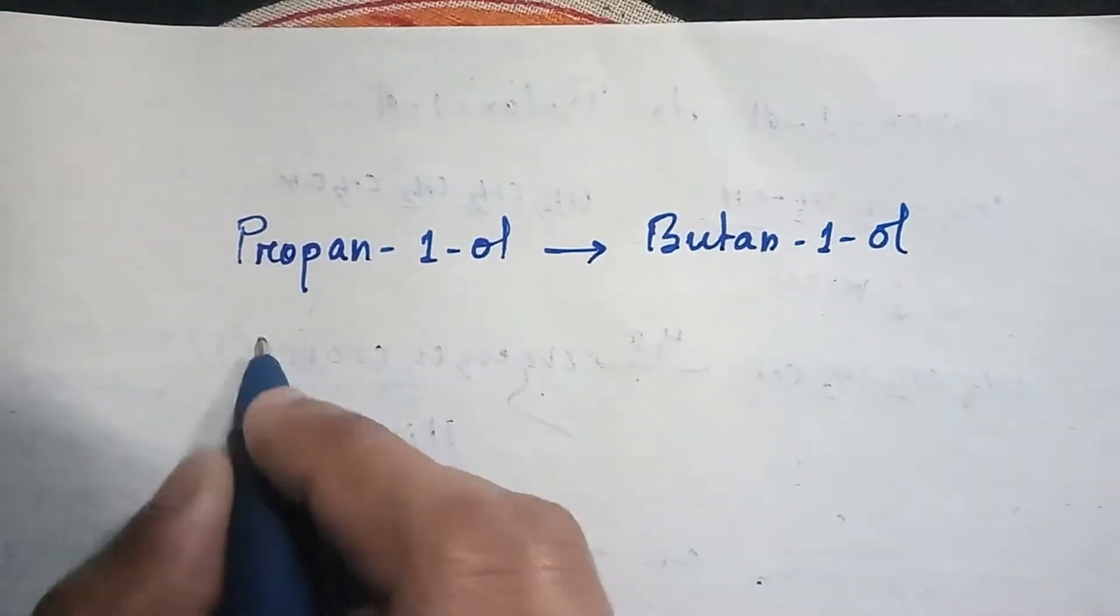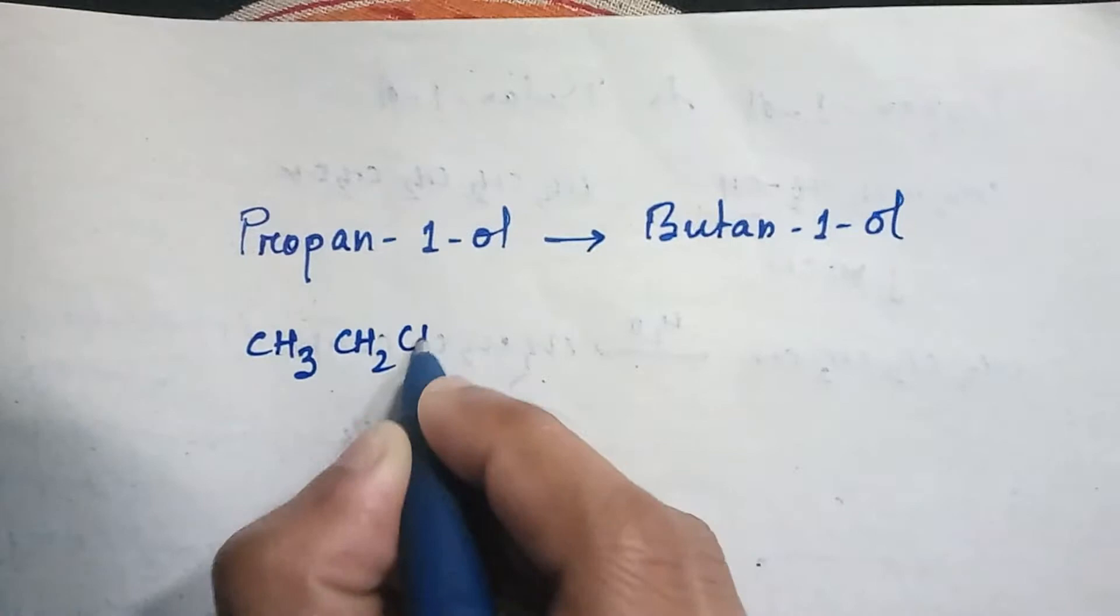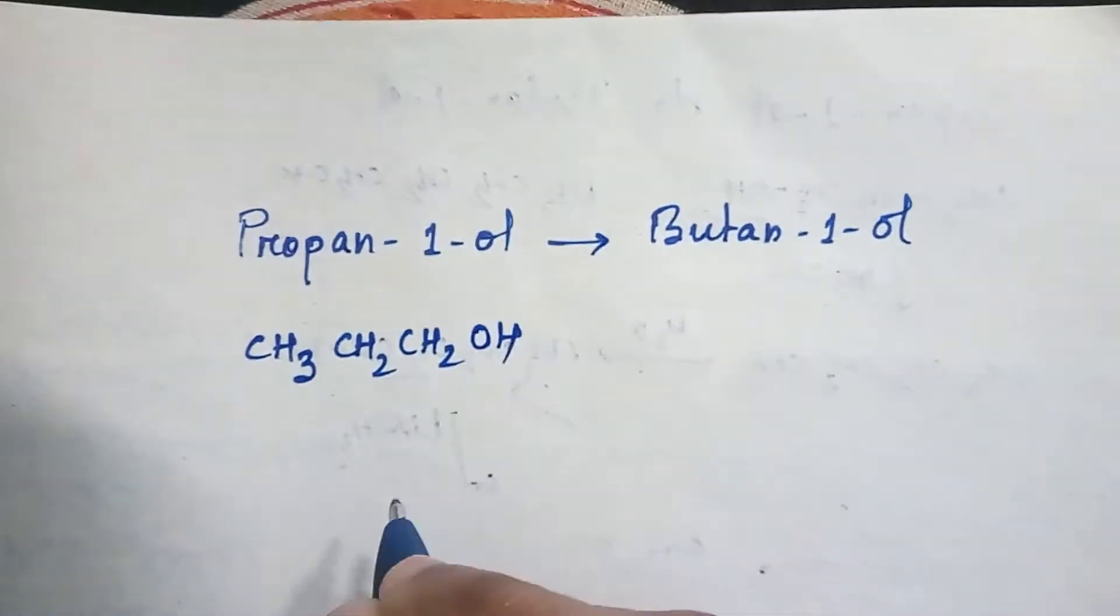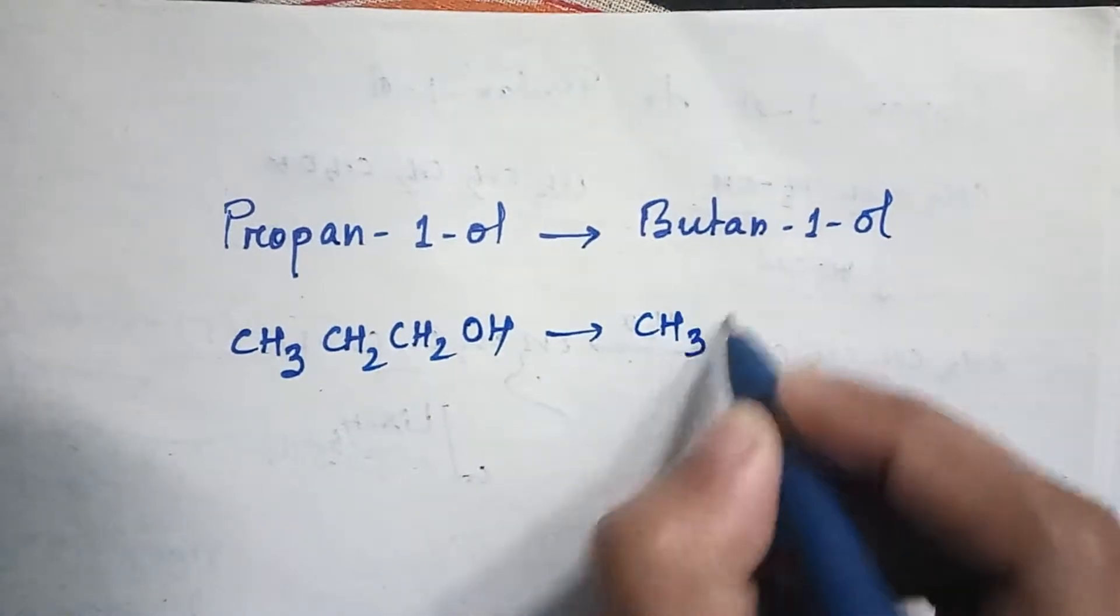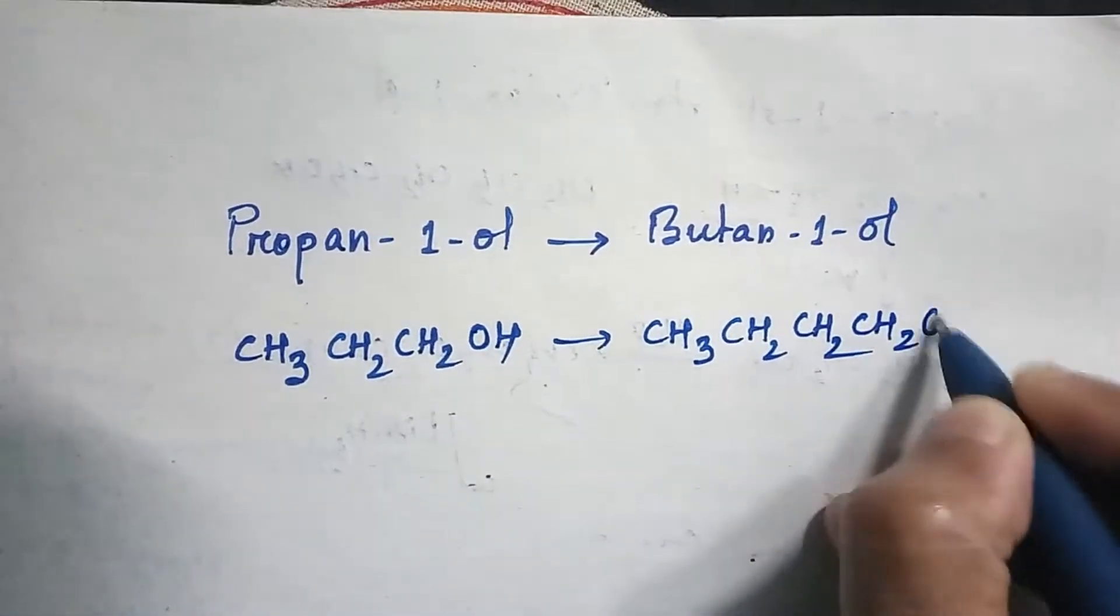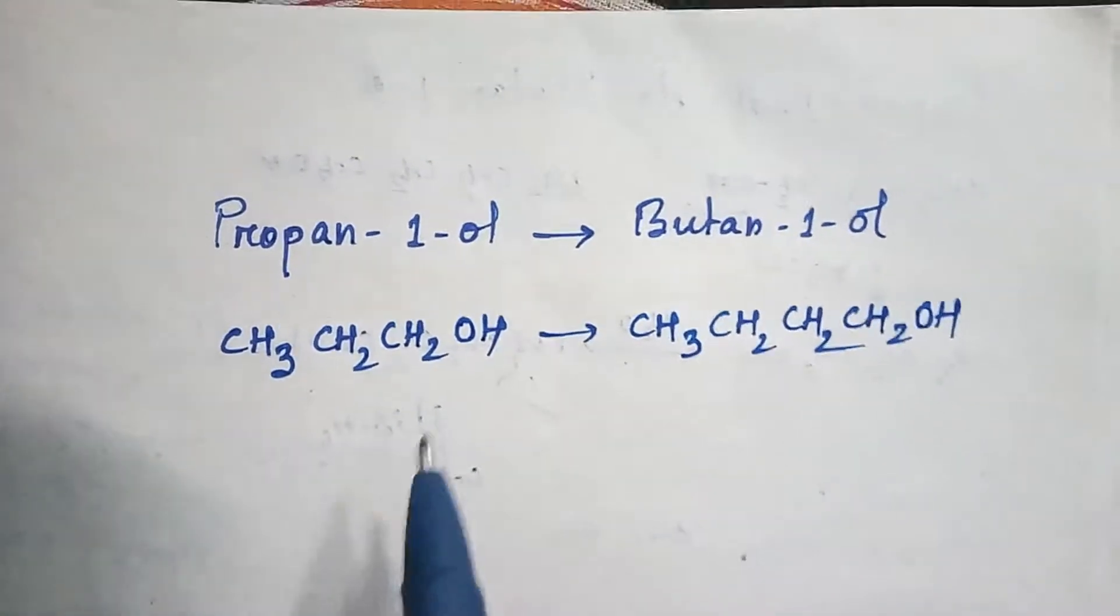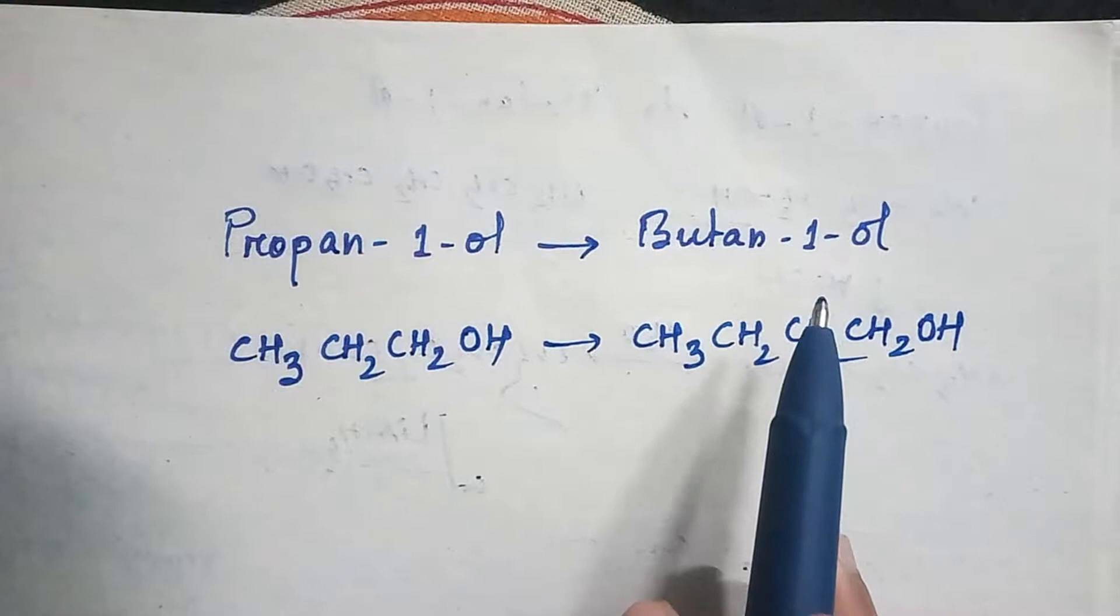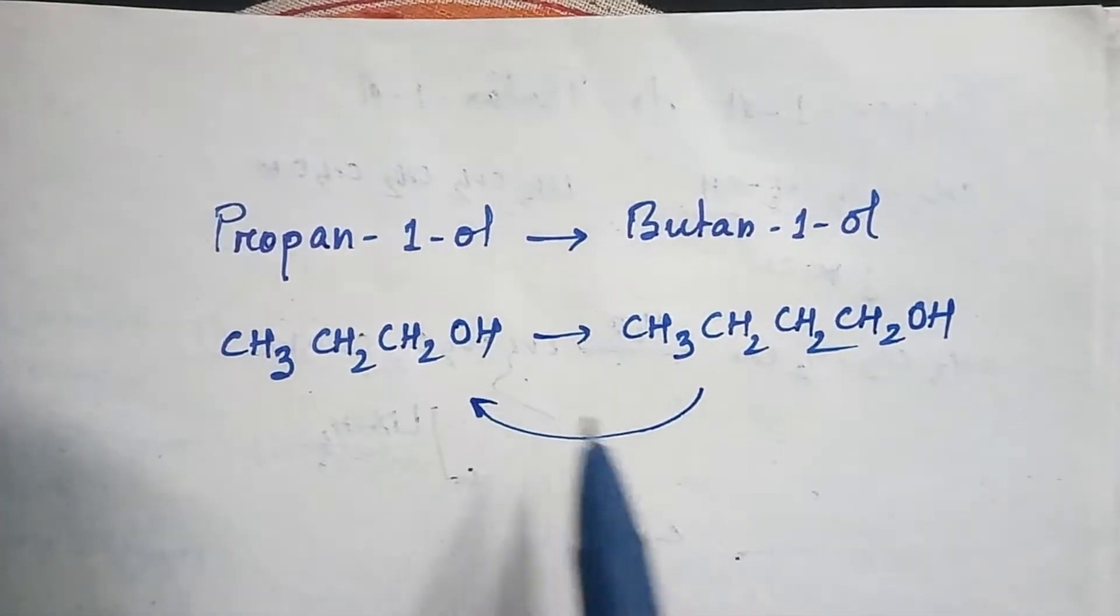First, write down the structure: propane-1-ol is CH3-CH2-CH2-OH and butane-1-ol is CH3-CH2-CH2-CH2-OH. Today we will see how to convert from propane-1-ol to butane-1-ol and also from butane-1-ol to propane-1-ol.